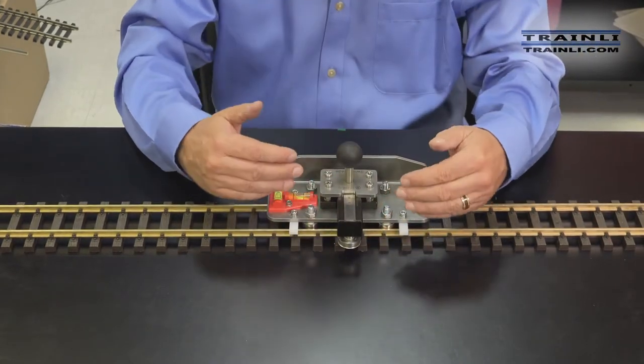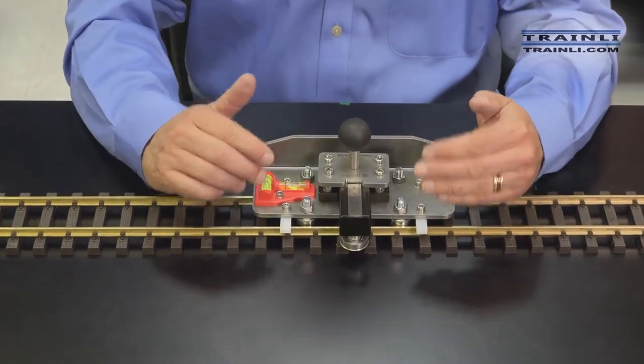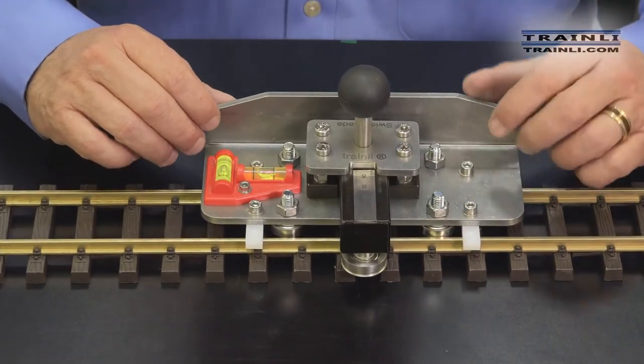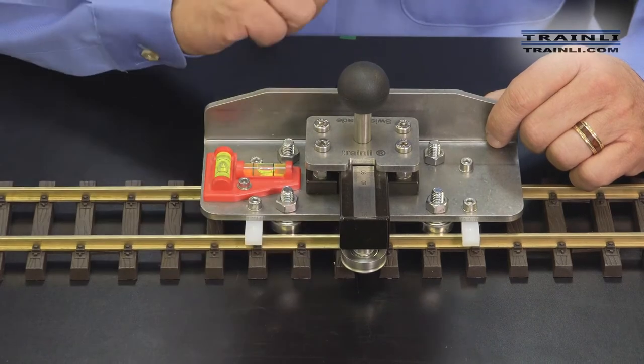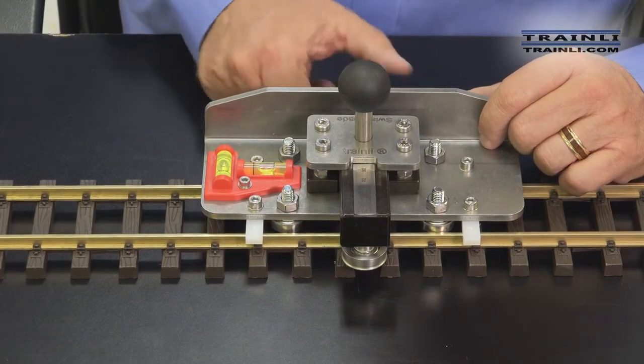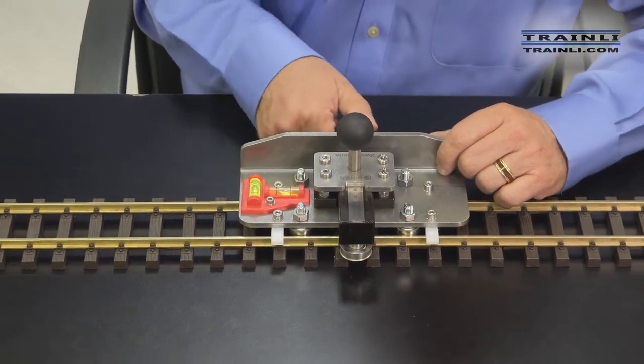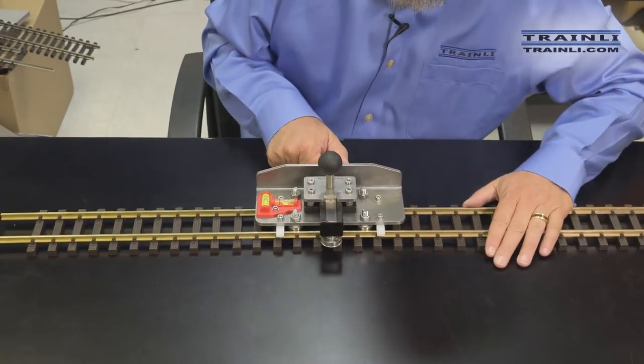This roller here will always be on the inside of your curve. So when you want to start a curve, you put the railbender on the track, have this wheel right about where you want that curve to start, and you start tightening this up. And you'll feel it get a little bit tighter on the rails, and it still moves nice and easy.